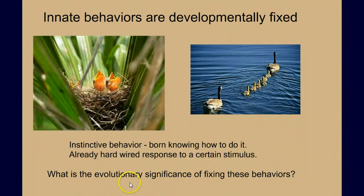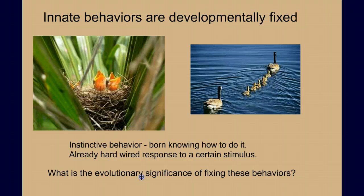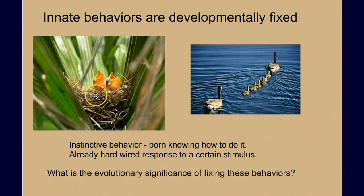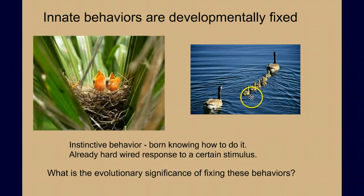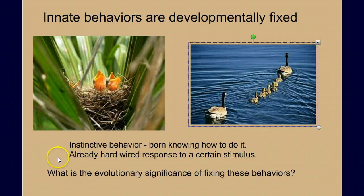The question is: what's the evolutionary significance of fixing these behaviors? Well, it kind of takes the guesswork out of it. This behavior has been selected for — any animal that doesn't exhibit it decreases their chances of survival. These innate behaviors are almost always the correct behavior from a survival or evolutionary standpoint. Any one of these little ducklings that didn't innately follow their mother and wandered off would certainly decrease its chances of surviving.